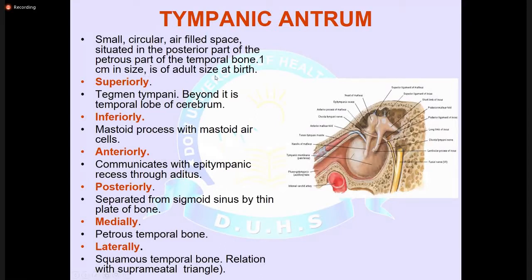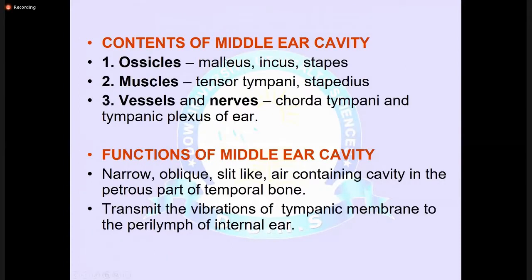The mastoid antrum is a small cerebral air-filled space situated in the posterior part of the petrous part of the temporal bone, about 1 cm in size in adults. It communicates with the epitympanic recess and is separated posteriorly from the sigmoid sinus by a thin plate of the temporal bone. The middle ear cavity contents include ossicles — malleus, incus, and stapes — muscles (tensor tympani and stapedius), vessels, nerves, the chorda tympani, and the tympanic plexus.